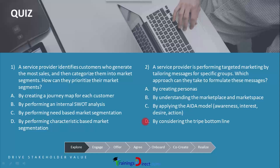Option D is about the triple bottom line — the factors which impact customer needs: social, environmental, and economic. These are the three bottom lines, so this is not about formulating the messages. Therefore the correct answer is C — by applying the AIDA model for awareness, interest, desire, and action. The AIDA model is helpful for formulating messages: it creates awareness about what can be offered, stimulates interest and desire, and triggers action from the consumer side.